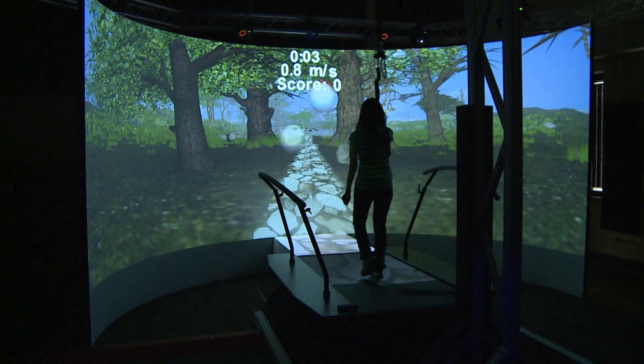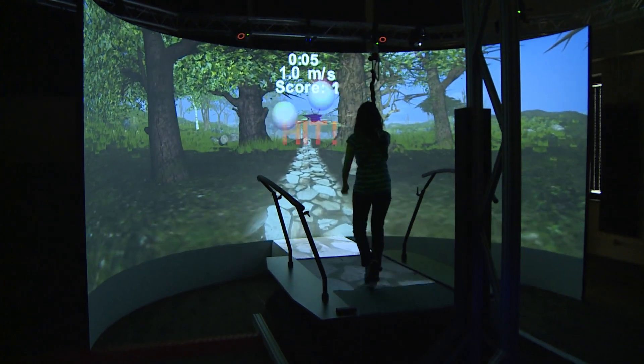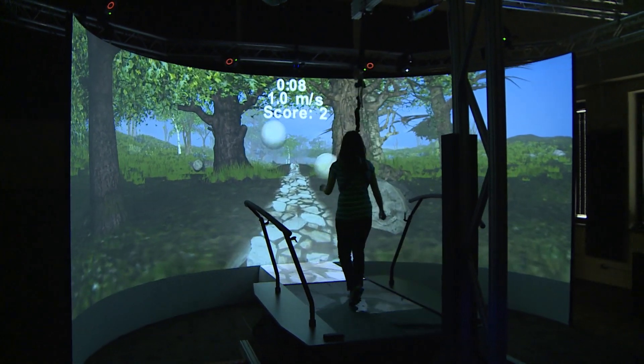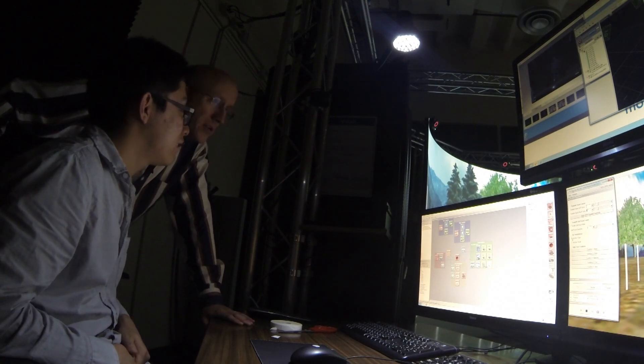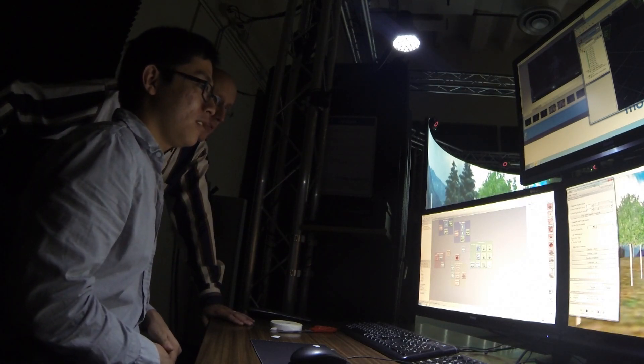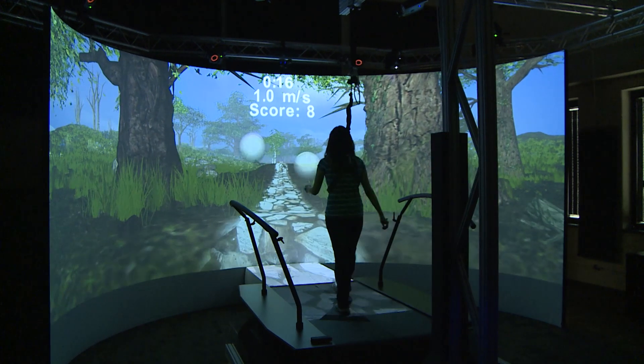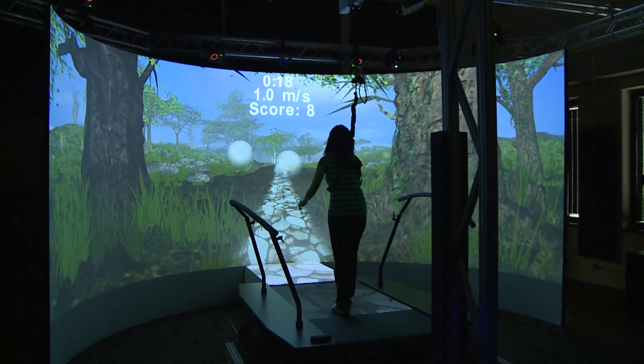So what we have here is a system where, with the treadmill, we can apply mechanical perturbations to the treadmill and we can essentially prod people mechanically while they're walking. We can actually change the speeds of the treadmill belt and we can prod their somatosensory information, the sensory information they get from their feet and their legs while they're walking. We can perturb the visual information through the virtual reality and do visual perturbations.